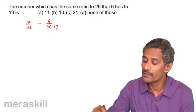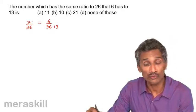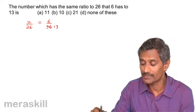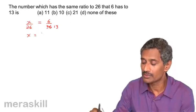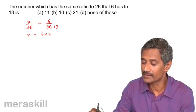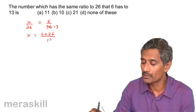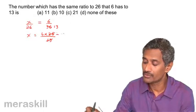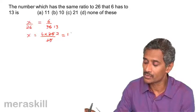The ratio of 6 by 13 is the same as the ratio of the unknown number by 26. So, X will turn out to be 6 into 26 upon 13 and you get 13 into 2 and you're getting it as 12.